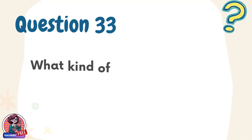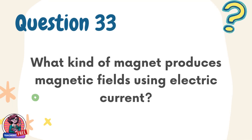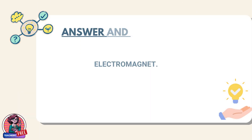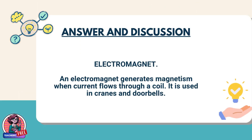Question 33. What kind of magnet produces magnetic fields using electric current? Answer: electromagnet. An electromagnet generates magnetism when current flows through a coil. It is used in cranes and doorbells.